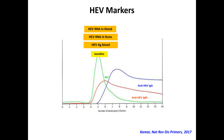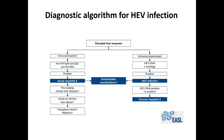Usually, IgM are positive at the acute phase of the infection, and soon after, IgG can be detected. This is the natural course for immunocompetent patients who typically clear the infection. But in chronic hepatitis E — with genotype 3 and 4 — all markers persist: HEV RNA in the blood and stool, HEV antigen, and notably IgM remain positive during the chronic course of the infection.